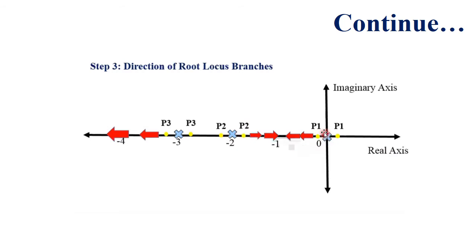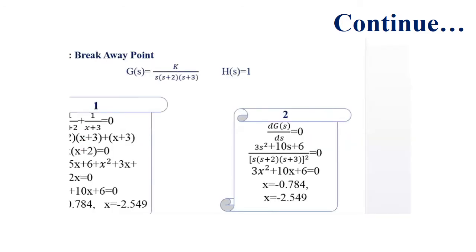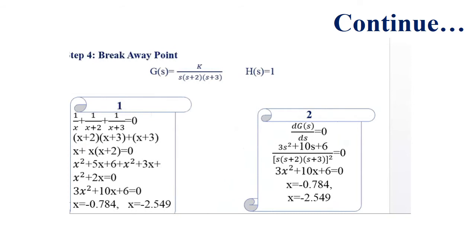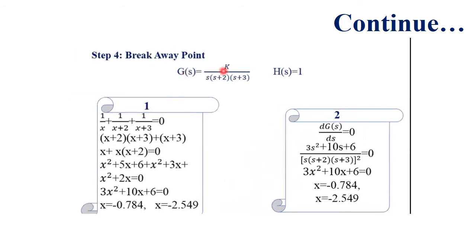For pole P1, there is also one pole on the right-hand side, so the direction of root locus branches is towards that side. For a point beyond P1 with no poles on the right-hand side, no direction of root locus branches will occur.